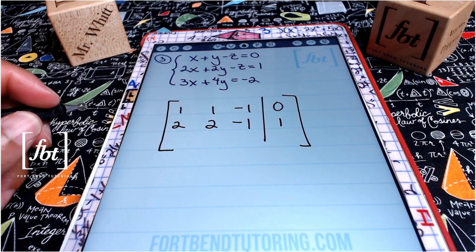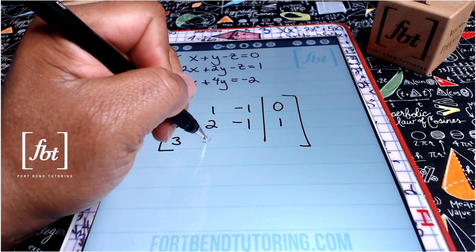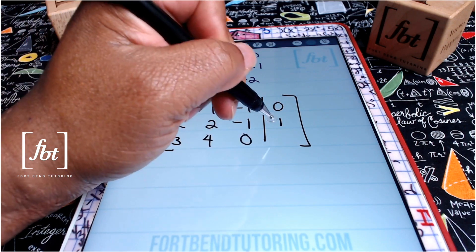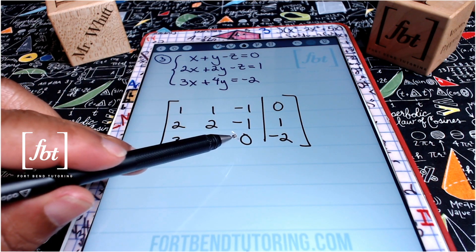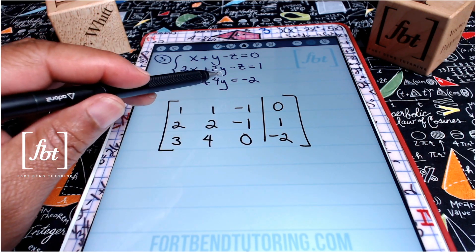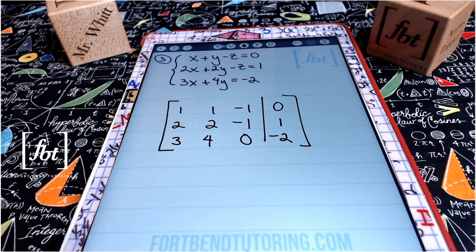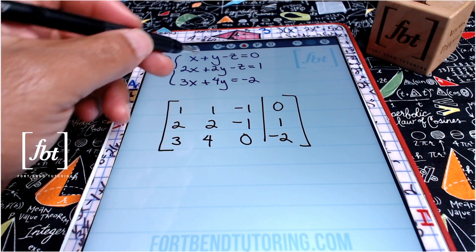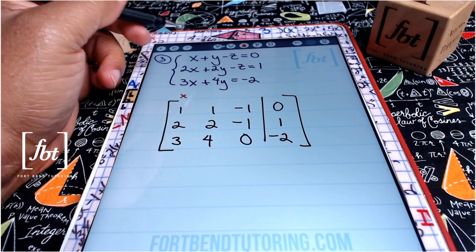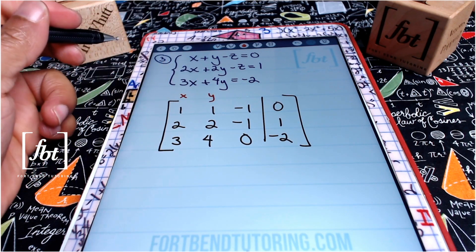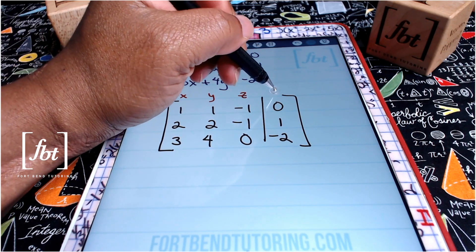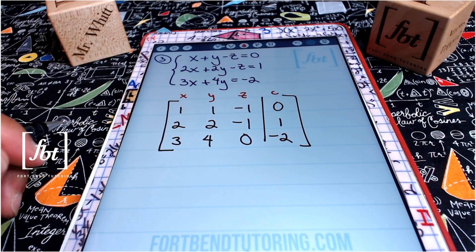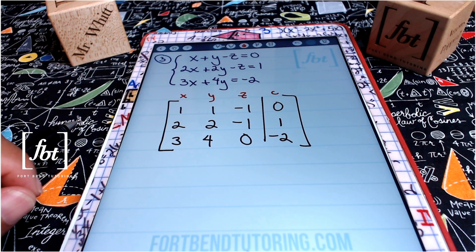For the third row, we'll have three, four, zero, and negative two. Notice that I ended up with zero in that third column of the third row because we were missing a z term in that third equation. You need to ensure that the first column represents the x terms, the second column represents the y terms, the third column represents the z terms, and then the last column represents your constants. So this is the answer for problem number three — red box it.